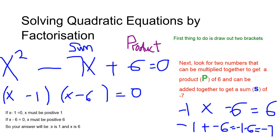The next one we have to do is this one. First thing, we're going to look for two numbers that can be multiplied together to get the product 6, and can be added together to get a sum of negative 7. Now, if you do negative 1 times negative 6, you will get a positive 6. And if you do negative 1 add negative 6, you will get negative 1 minus 6, which gives you negative 7.